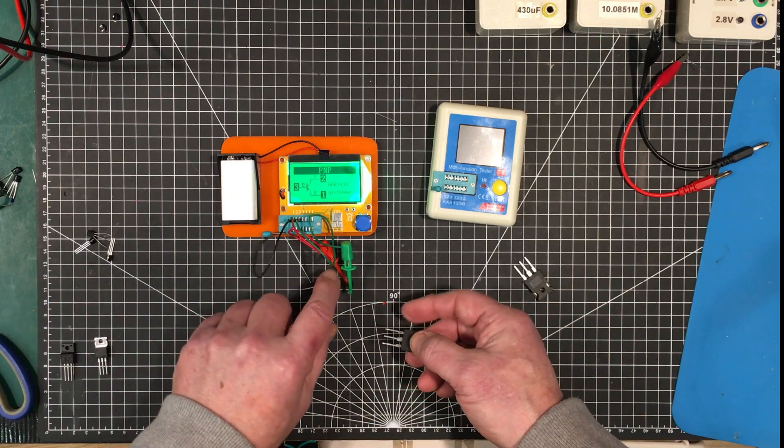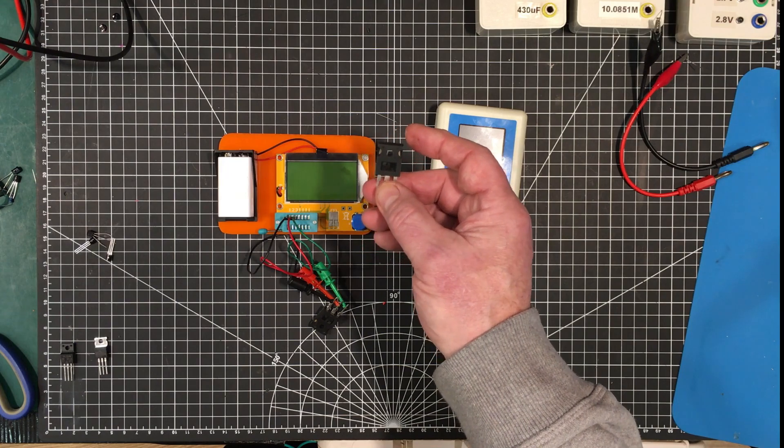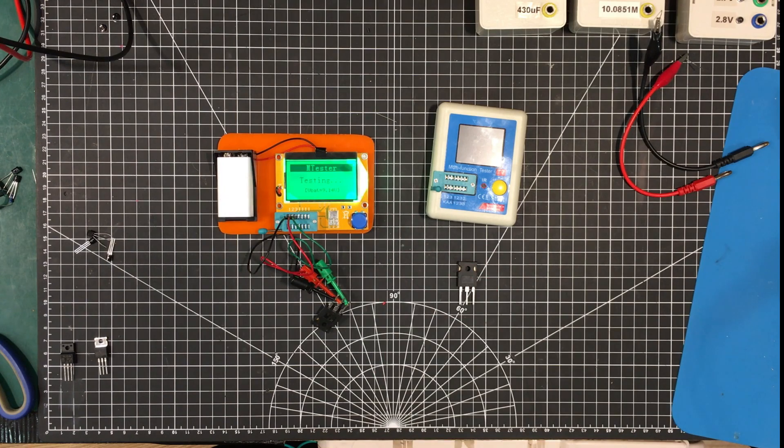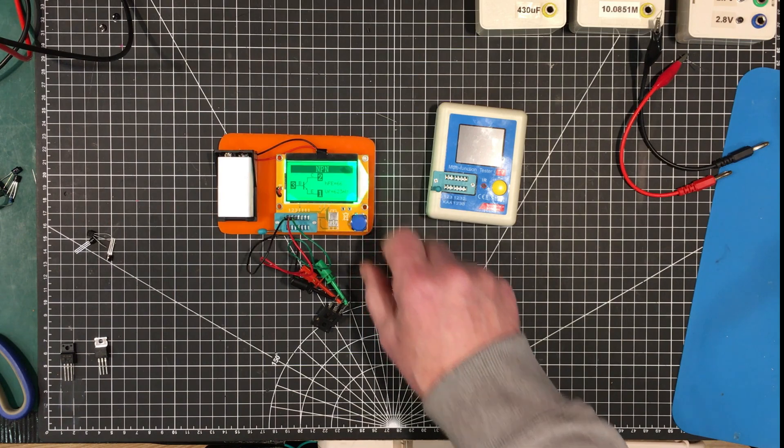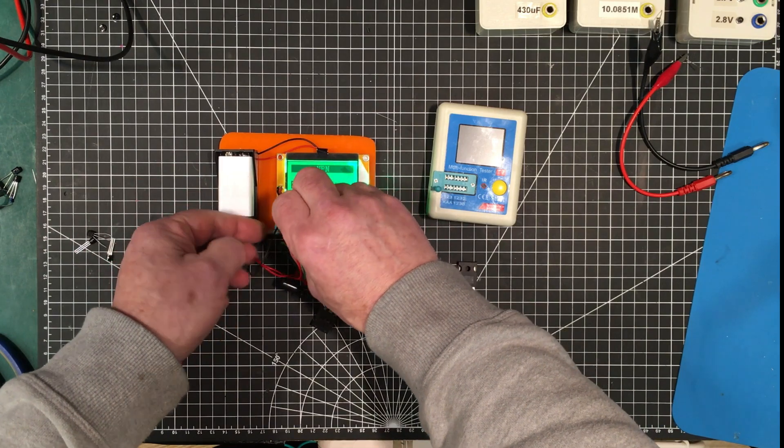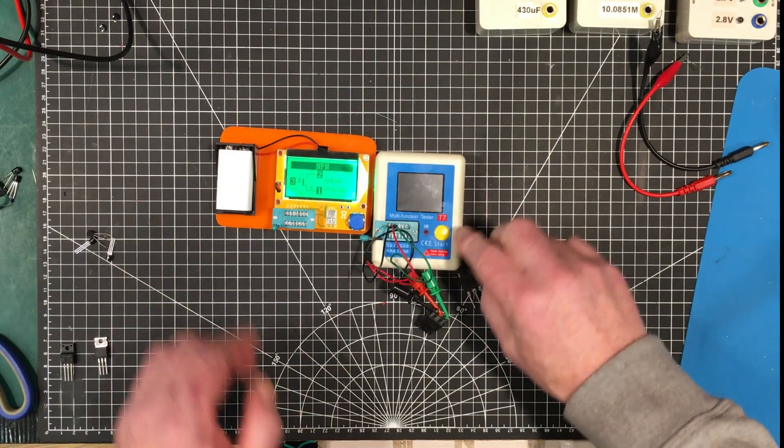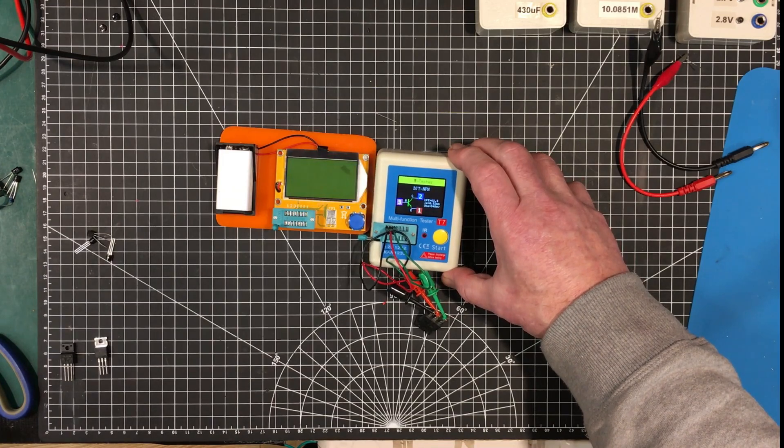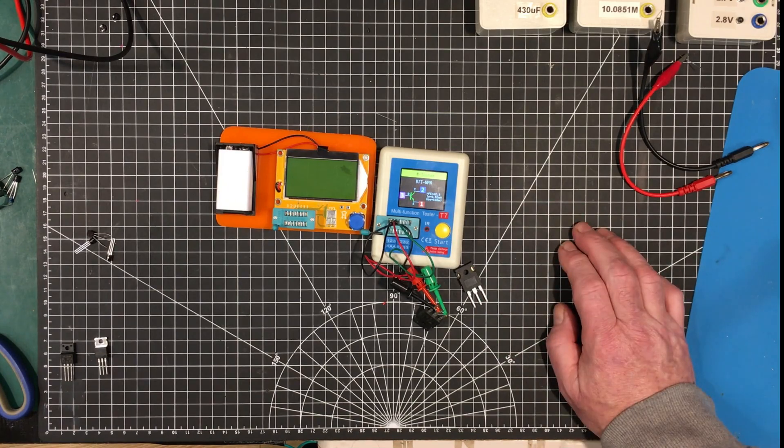This is a good old 2N3055 here. So this one here was a 2N2955, which is the complement of this, the PNP complement. This should have a gain of 66 and a forward voltage of 623 millivolts. All right. Let's move over here. See what we get.